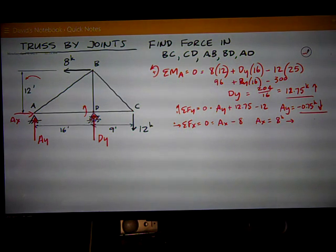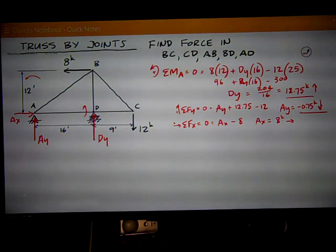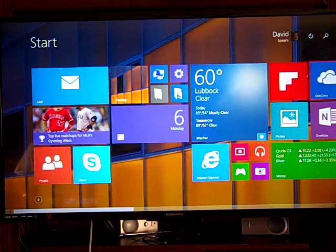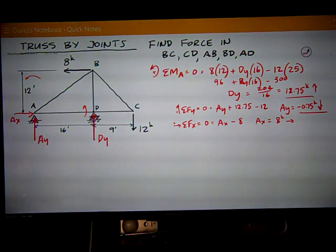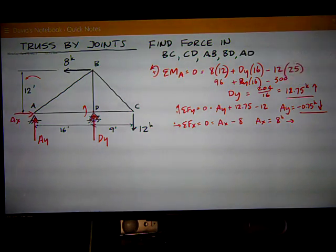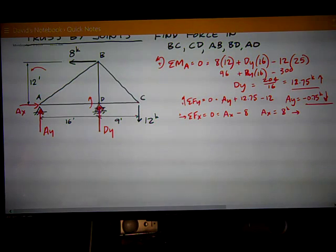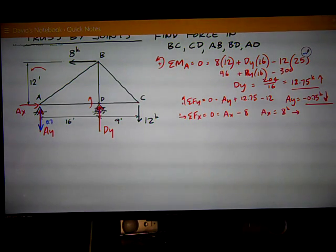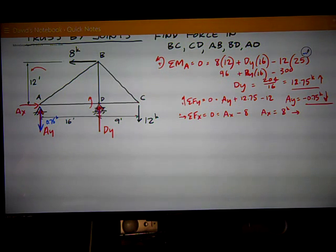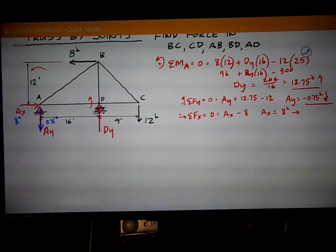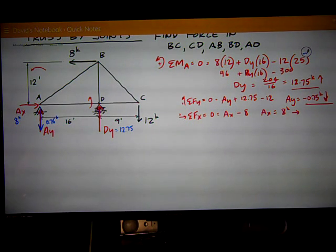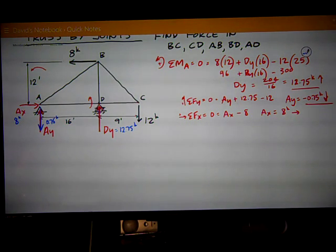So, I need to go over here to AY and reverse it on my drawing. So, I'm going to do that in blue, just to keep a record of it. So, AY is 0.75 kips. AX is 8. DY is 12.75. Now, I'm ready to proceed with my solution.